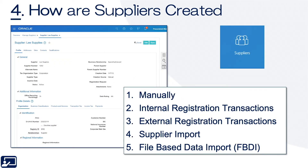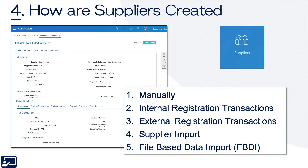Fourth topic: how are suppliers created? There are any number of ways a supplier gets created in Fusion or Oracle Cloud. First, obviously manually. Second is a process called registration. Registration is often thought of as creating a supplier — it's not; it's its own transaction. In fact, you could have prospective supplier registration or spend authorized supplier registration. It's only when those registrations are approved that you have suppliers in the supplier records. You can also have internal and external registration, and you can import suppliers using FBDI.